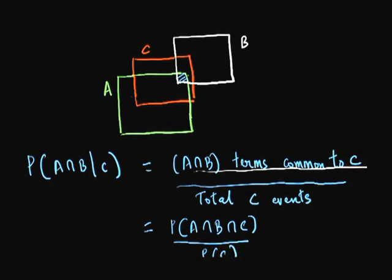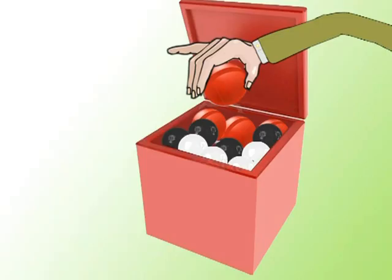So now we have another problem. How do we calculate the intersection of three sets? We've only dealt with two so far. We'll use an example to understand this. So here I have four red, four black and four white balls placed in a box.